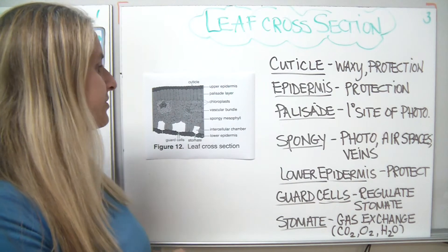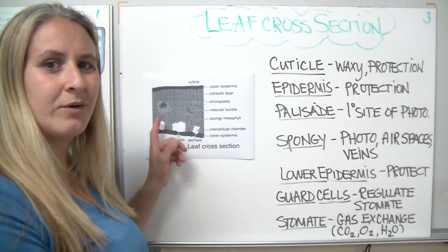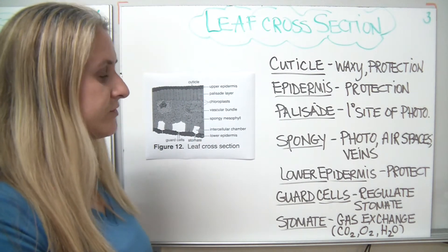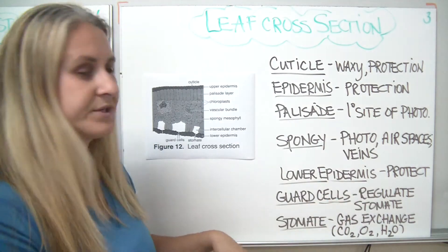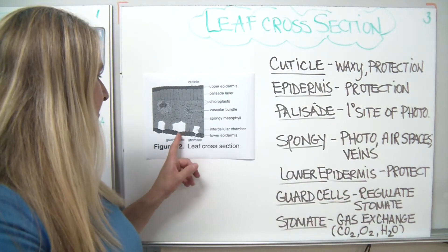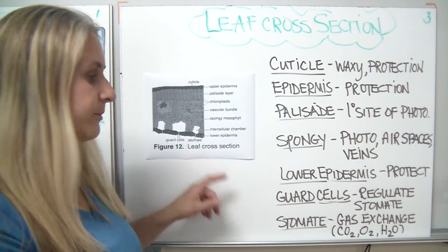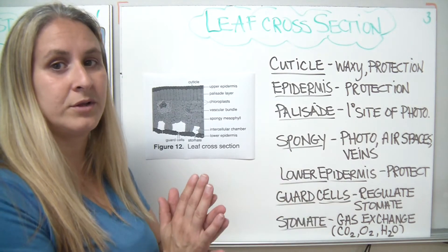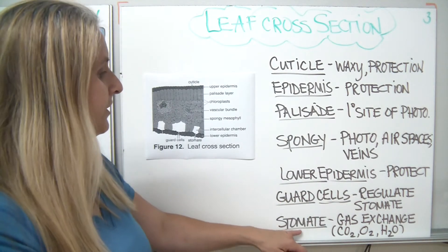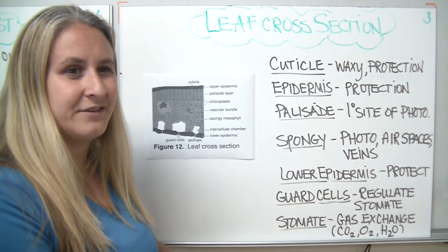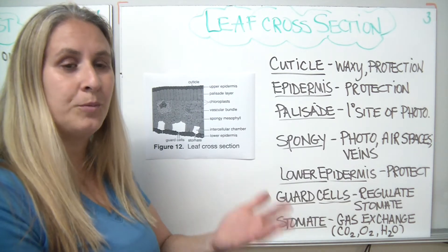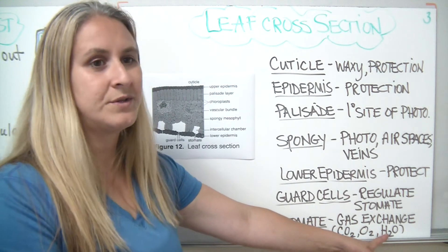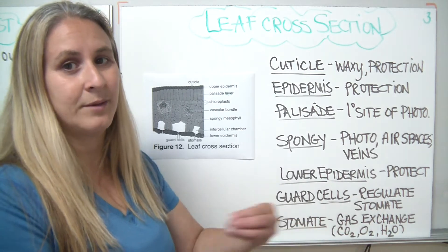The lower epidermis contains these guard cells and stomates and serves as a protective layer. The guard cells are the two cells surrounding the stomate, which is essentially a pore. The guard cells help to regulate the stomate — they open and close this pore, which we'll talk about in detail later. The stomate is the site of gas exchange; it's an opening that opens and closes, allowing carbon dioxide and oxygen gas to pass through, and it also allows water vapor to escape from the plant.